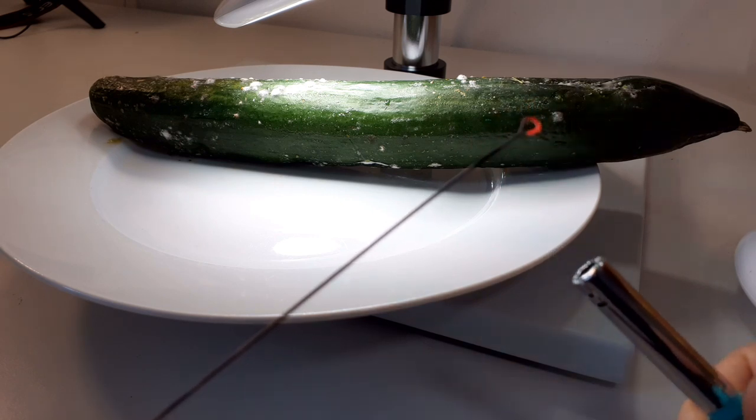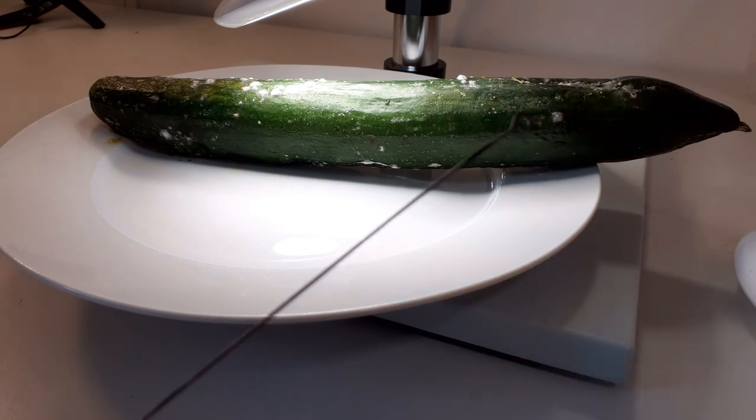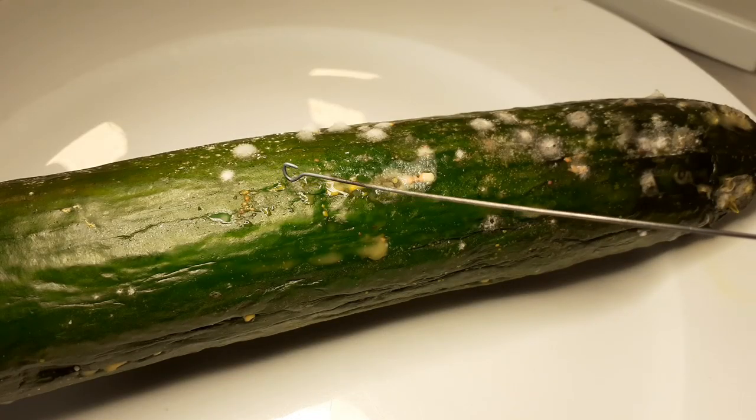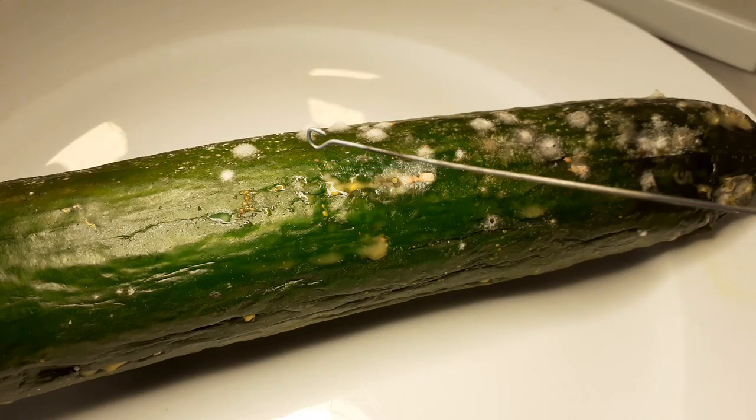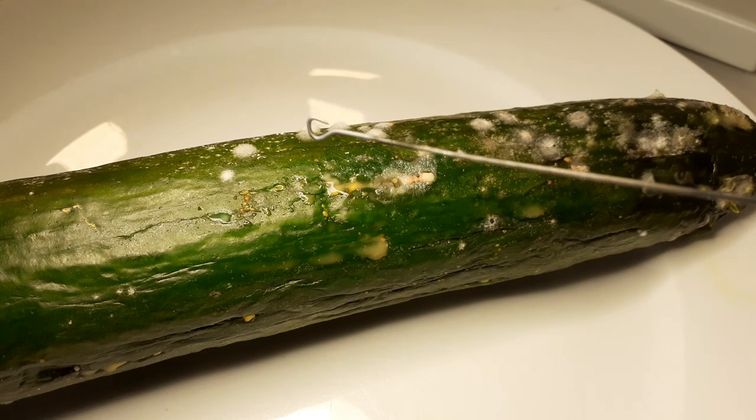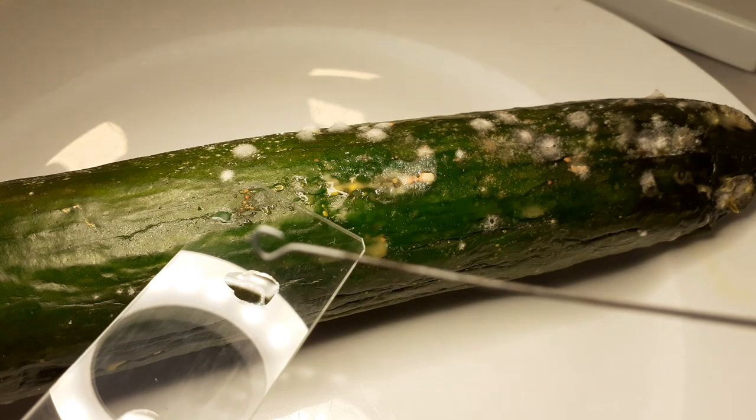And in order to do that I have to disinfect my inoculating loop with a flame. And after it cooled down I'm picking up one bacterial colony and I'm suspending it in a drop of water on my microscope slide.